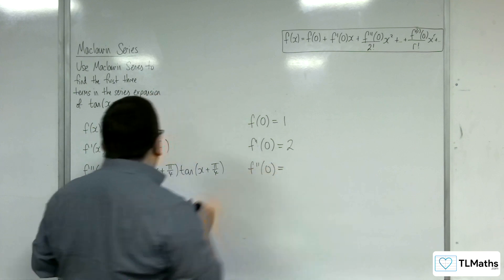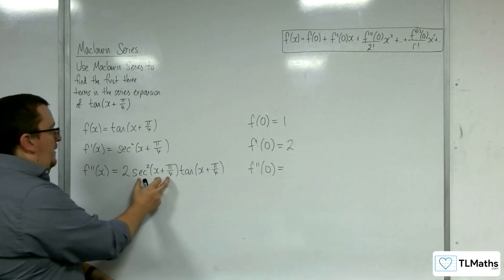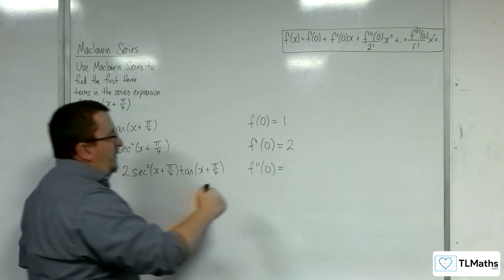And then the second derivative evaluated at 0. So we know that that's 2, times 2 is 4, times 1, so that's 4.